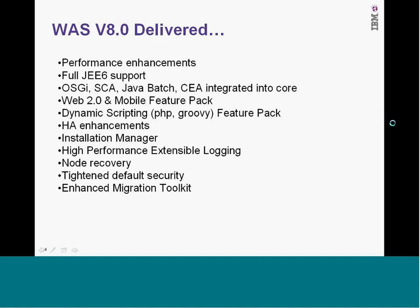In version 8, we included a lot of enhancements. As well as general performance improvements across the board, we introduced JEE 6 support and brought in some of the feature packs which worked on version 7 — OSGI, SCA, the Java batch engine, and communication-enabled applications. A number of things were integrated into the core product and some new feature packs came along as well, because we make sure with feature packs that we deliver capabilities quickly to clients without necessarily requiring a full upgrade to a new major release. At that point we also brought out the Web 2.0 and mobile feature pack and the dynamic scripting feature pack, both of which are extremely popular.